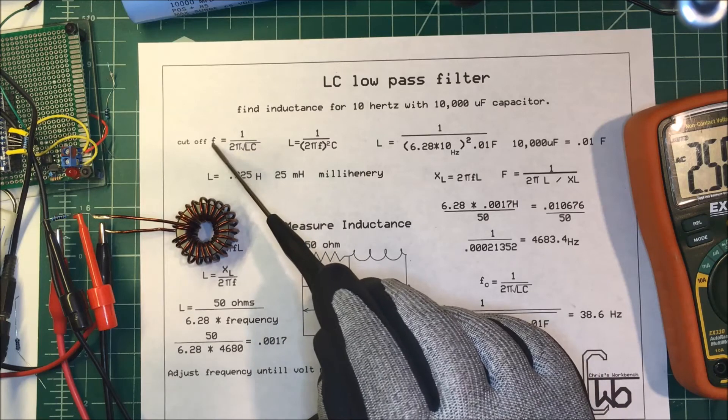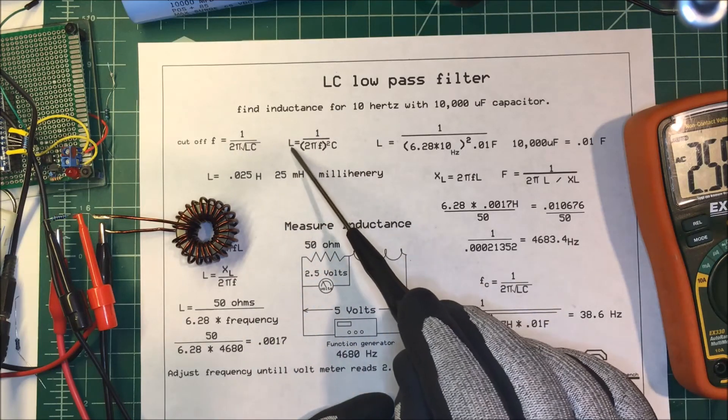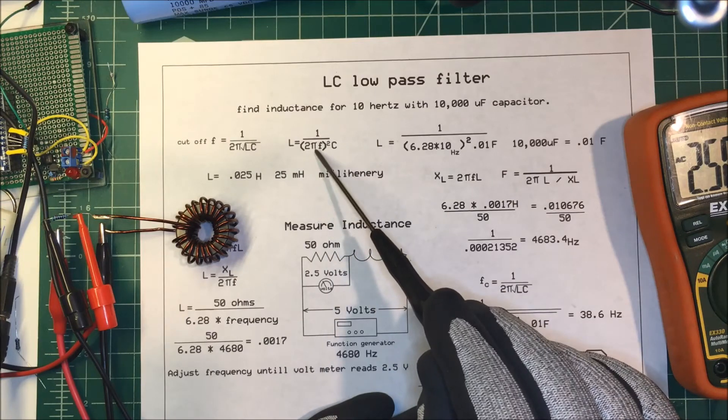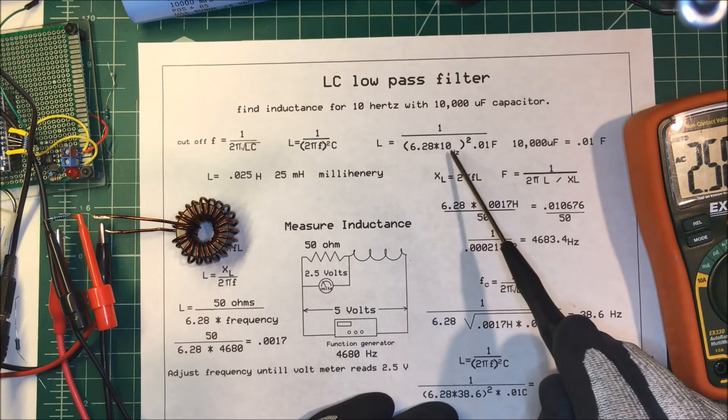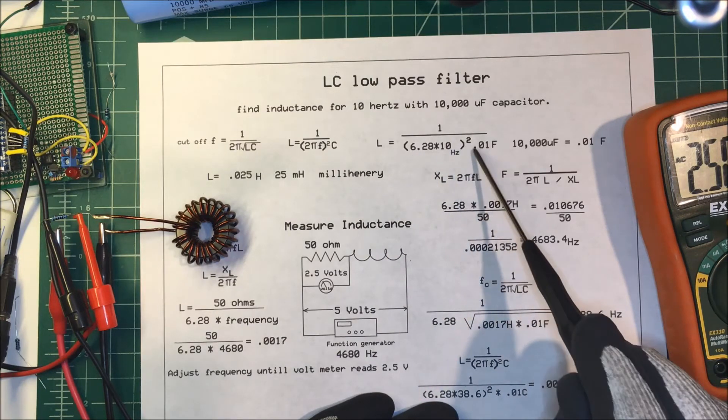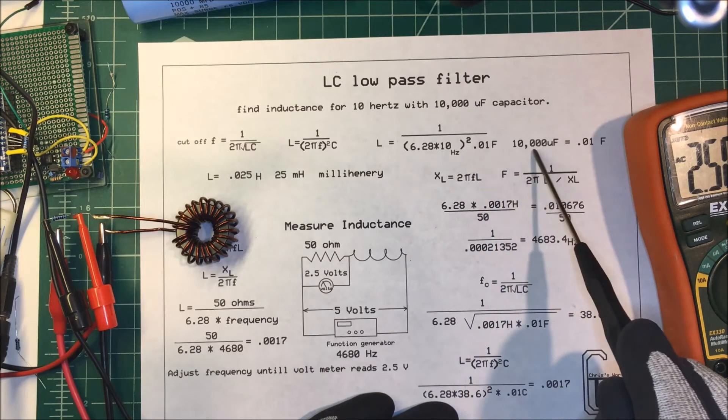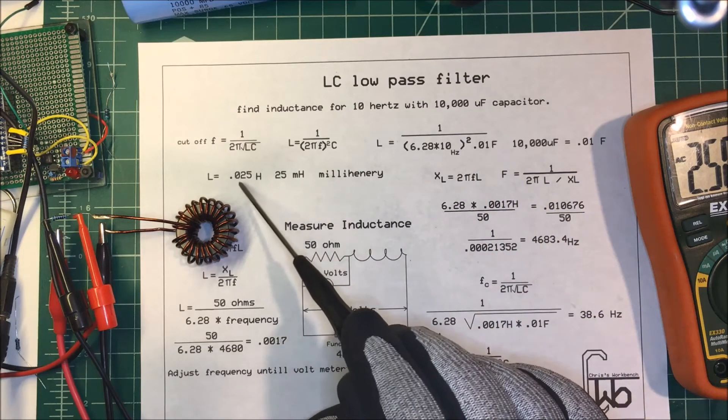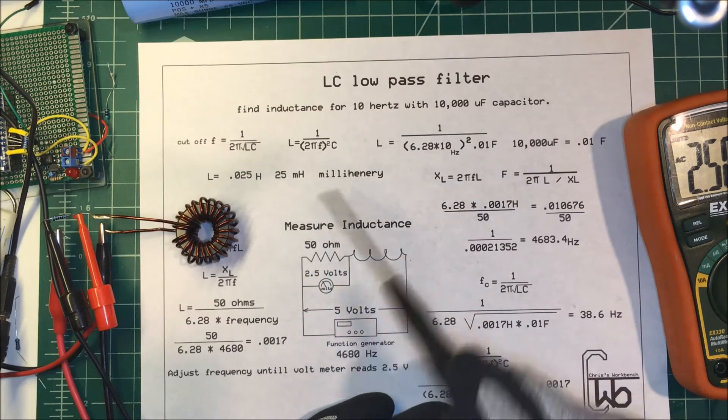I know the capacitance and frequency, so we want to solve for L. We can rewrite the formula where L equals 1 over 2π times frequency squared times capacitance. So we have 6.28 times 10 (our frequency), square that and multiply by 0.01 farads, which is 10,000 microfarads, and it comes up to 0.025 henrys or 25 millihenrys.